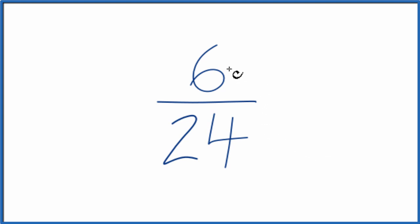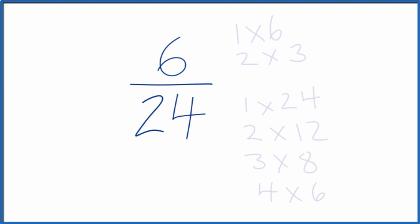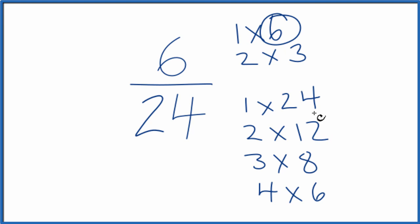We need to look at the factors of 6 and 24 and find a factor that goes into both. Here are the factors of 6 and 24. We're looking for a common factor, the greatest common factor. I see I have a 6 here and here.